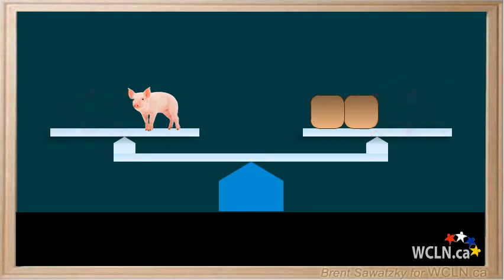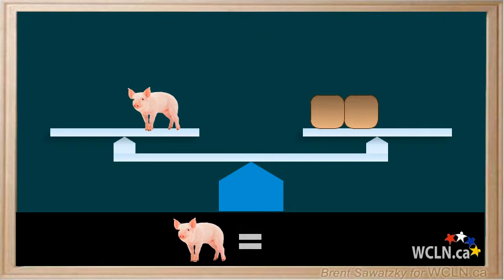And here we are. The pig is by himself on the left, and we have two blocks on the right. So a pig is clearly equal to two blocks. That was a tough one.